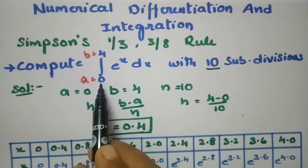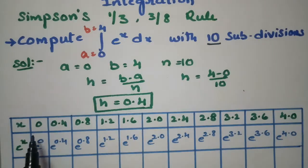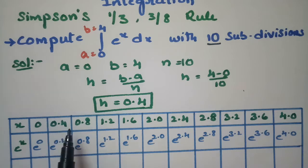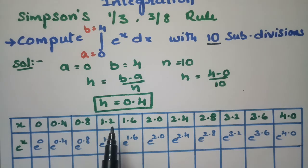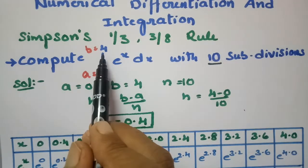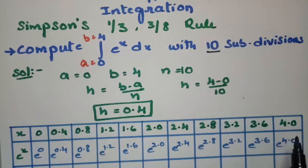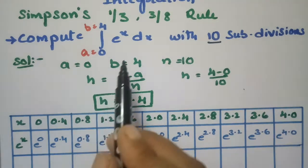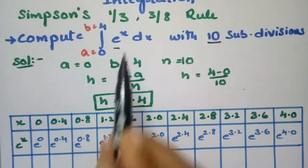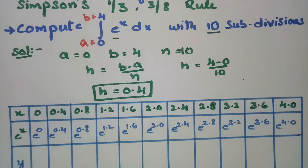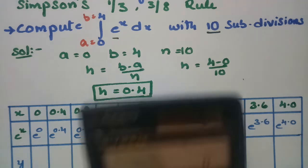From the starting point 0, we have to add 0.4 for each and every term till the ending point b, that is 4. Our y value is nothing but e^x. So we compute e^0, e^0.4, and so on.